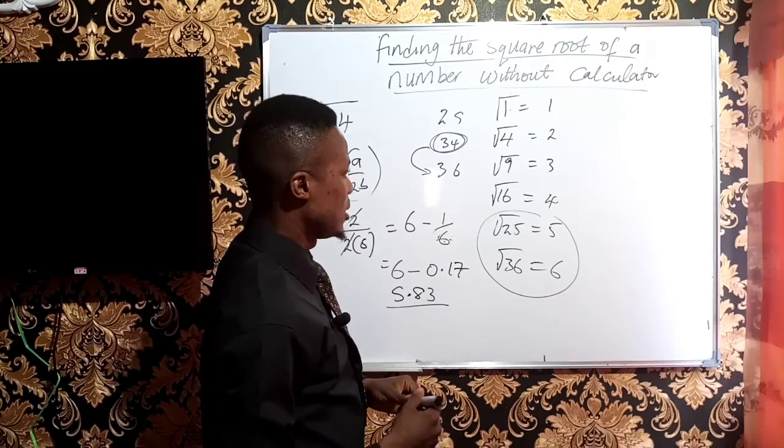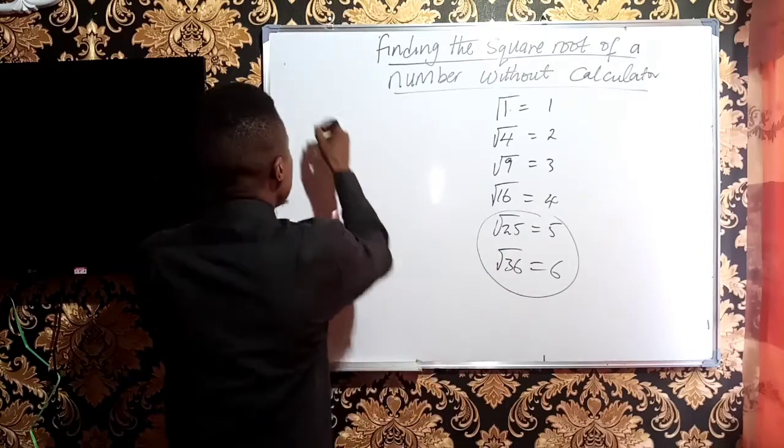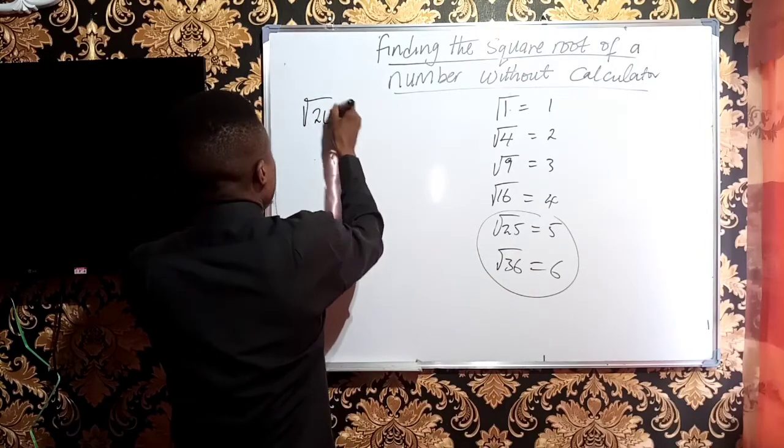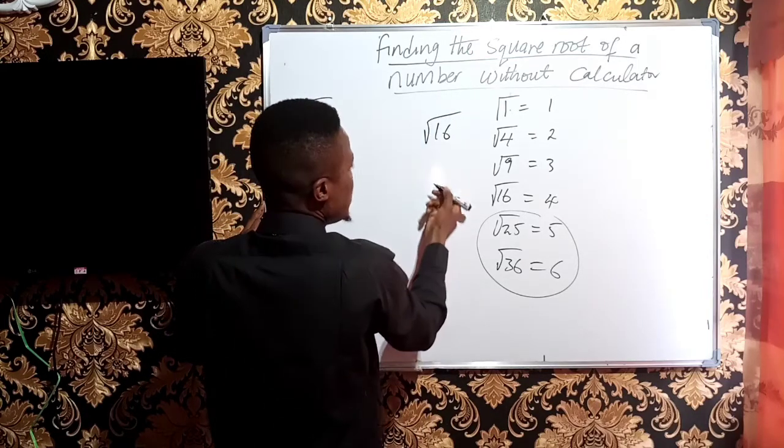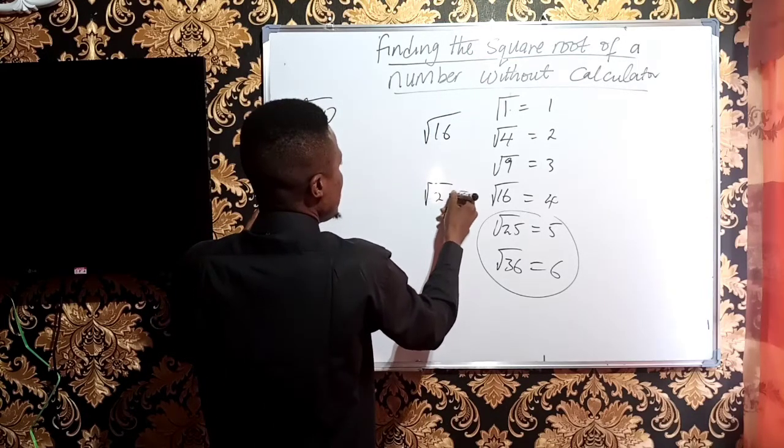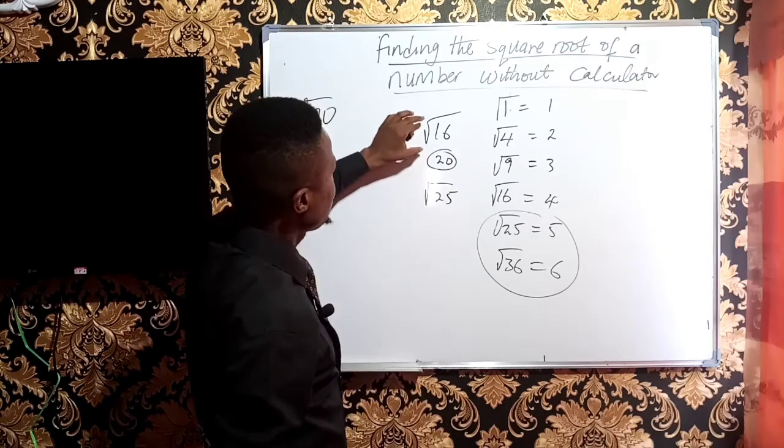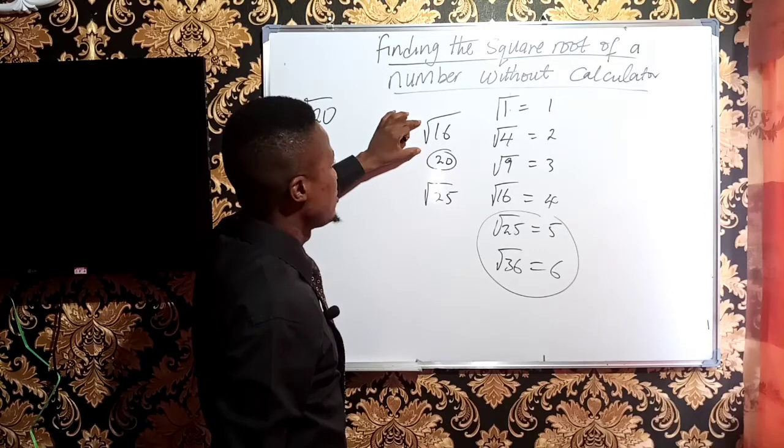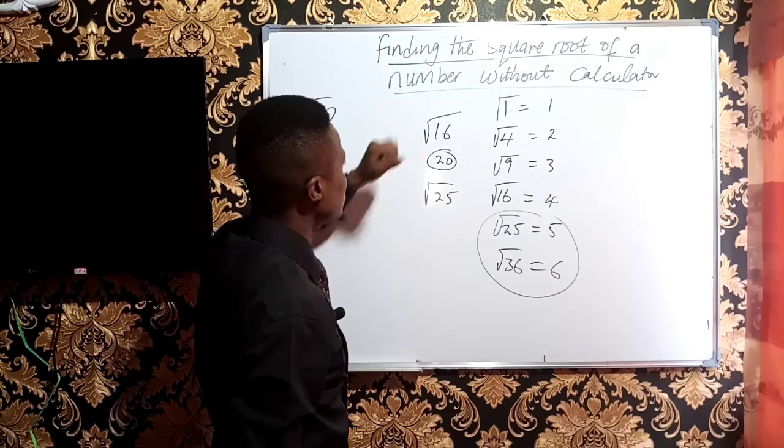You can try with another number. Let us try it with 20. If you want to get the square root of 20, 20 is in between 16 and 25. You can see 20 here. And 20 is 4 away from 16 and 5 away from 25, so 20 is closer to 16.